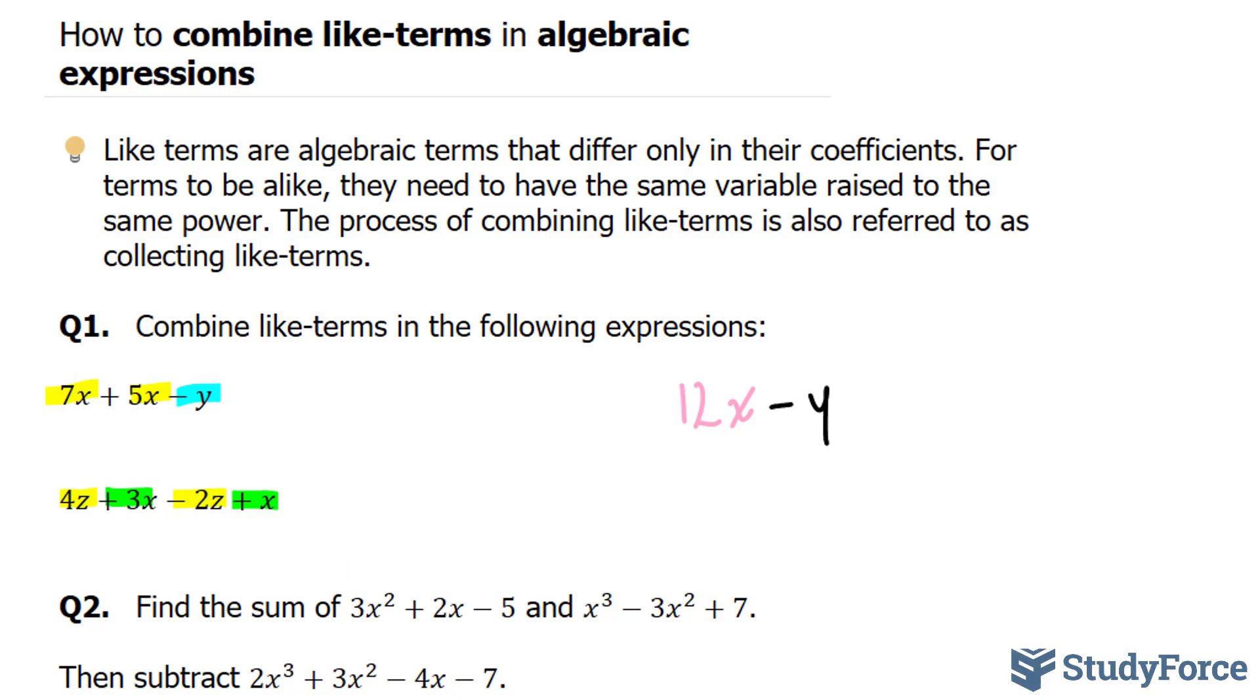4z has a coefficient of 4, the number in front of the letter is called a coefficient. And the coefficient here is minus 2. 4 minus 2 is equal to 2z. 3x plus 1x. Even though the coefficient here isn't written, it's actually a 1. So 3 plus 1 is equal to 4x. That's the simplified expression for the second one.